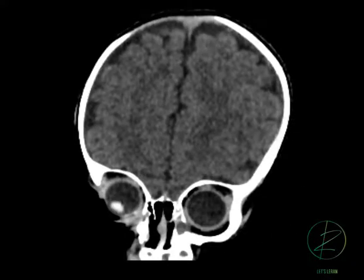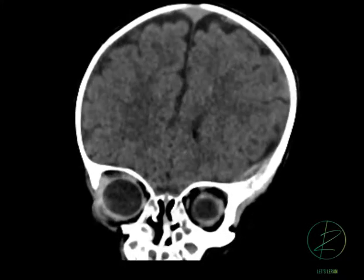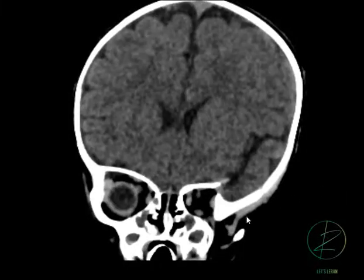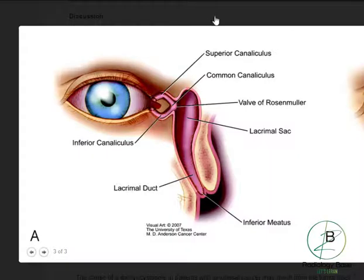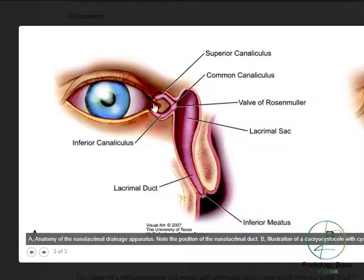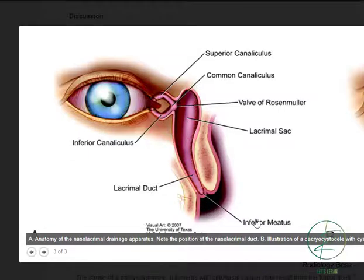Extending inferiorly into the inferior meatus through the lacrimal duct. To explain this further, this is a presentation from AJNR. You can see that along the medial aspect of the orbit there is a lacrimal drainage system — there is a superior canaliculus superiorly and an inferior canaliculus inferiorly, and they are both draining into the common canaliculus, and then both drain into the lacrimal duct.